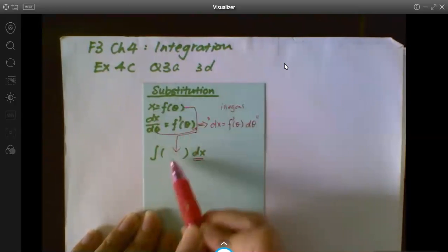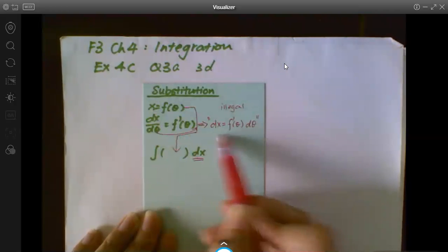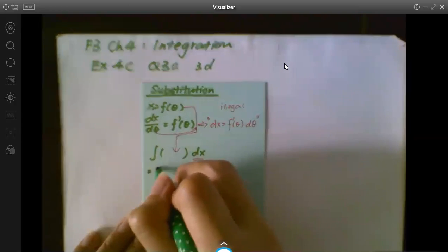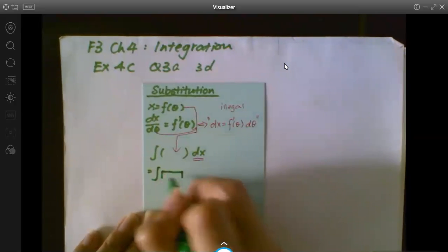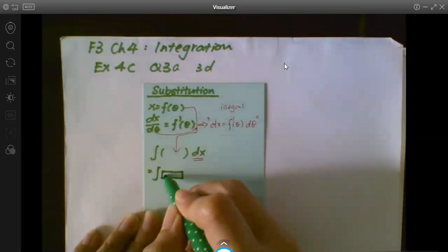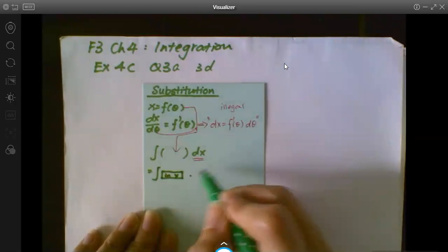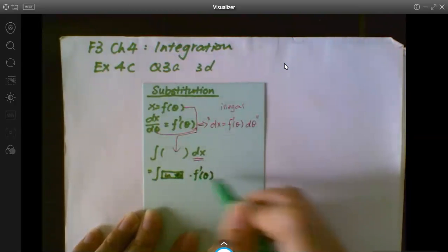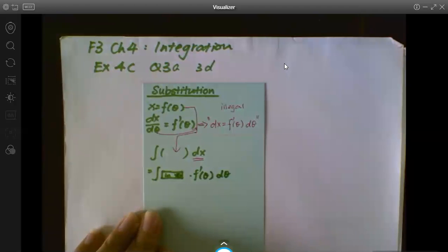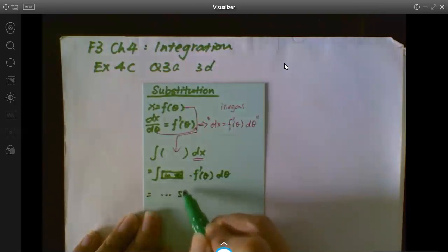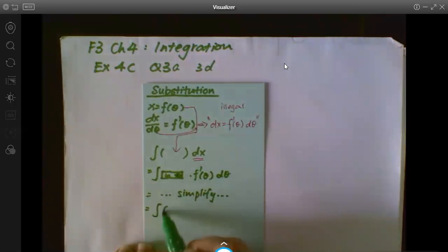So when we substitute x into the question and dx with this, you will get something in theta after you sub in your x, times F'(θ) dθ. So the next step would be to simplify everything before you do any integration. And take note that after you simplify everything should be in terms of theta. So you get something else dθ, everything here should be in theta.